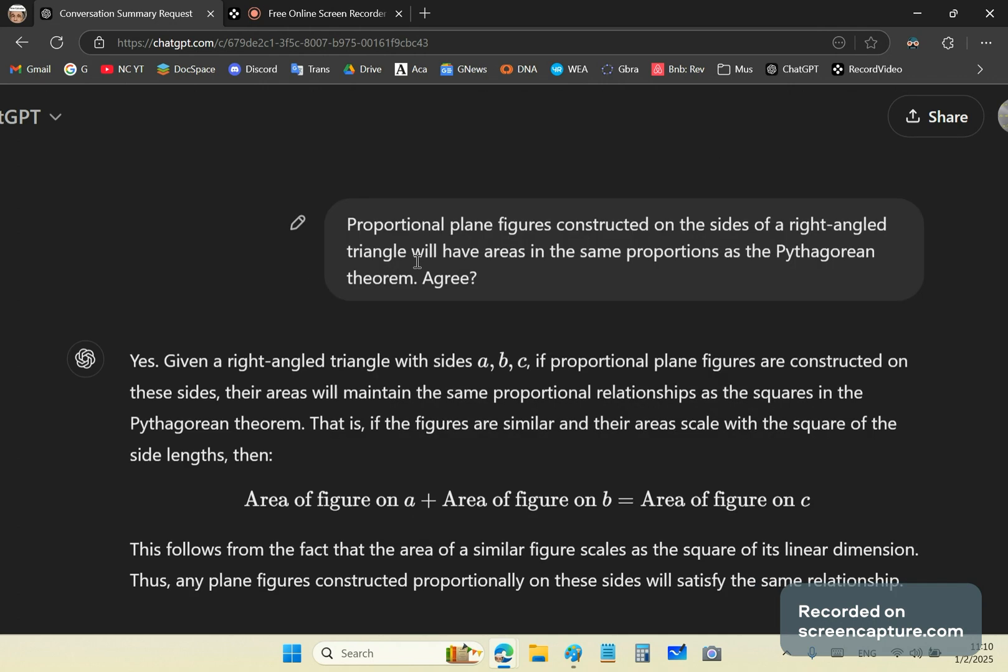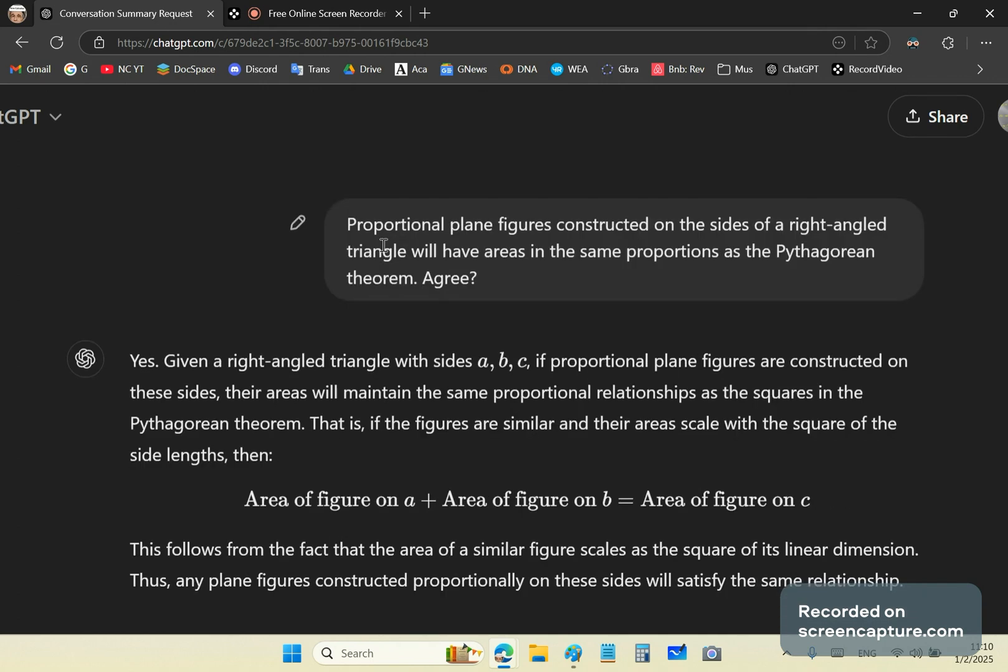Now, here's my prompt to GPT. Proportional plane figures constructed on the sides of a right-angled triangle will have areas in the same proportions as the Pythagorean theorem. Agree?